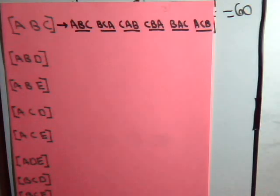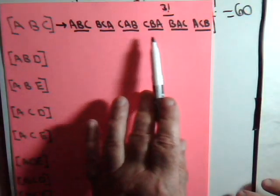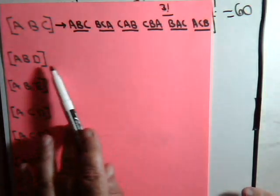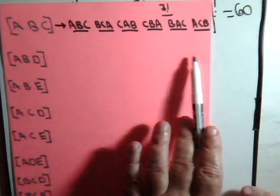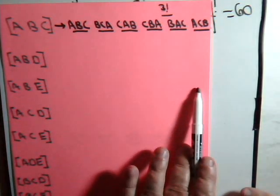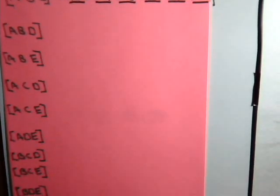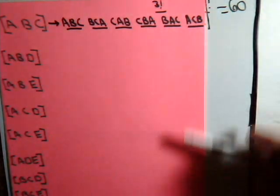The top combination written out gives us three factorial — six permutations. Likewise for each of the other combinations. So if we consider all the permutations that could be generated from each one of these combination groups and added them all together — if you have ten of them and each one makes three factorial, or six, together they would form a set of 60 permutations.